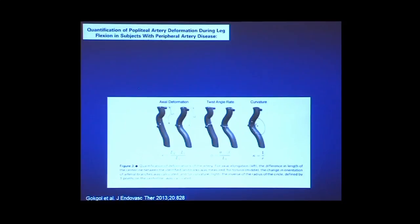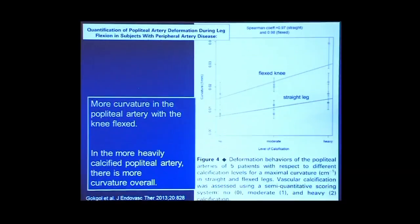Someone is doing high-level math and applying it to the popliteal artery, looking at both less diseased and more heavily diseased arteries. What you find is that there's more curvature in the popliteal artery with the knee flexed — we knew that. But also in the heavily calcified popliteal artery, there's even more curvature overall, and that can be modeled: patients with heavy calcification in the flexed knee position show more curvature.